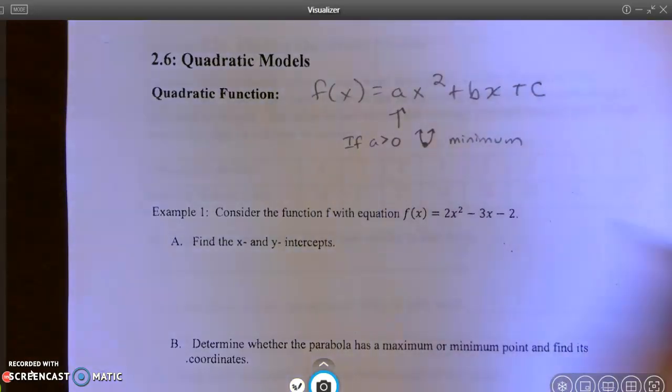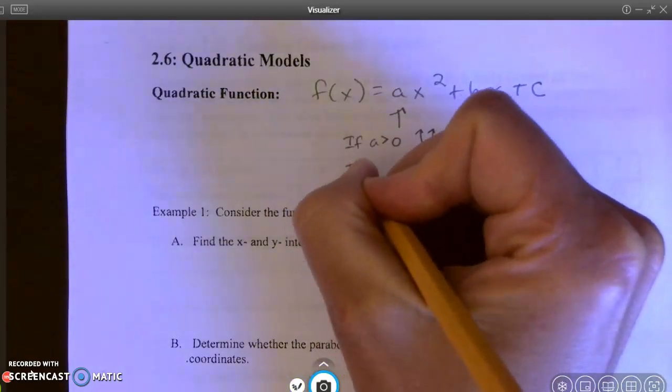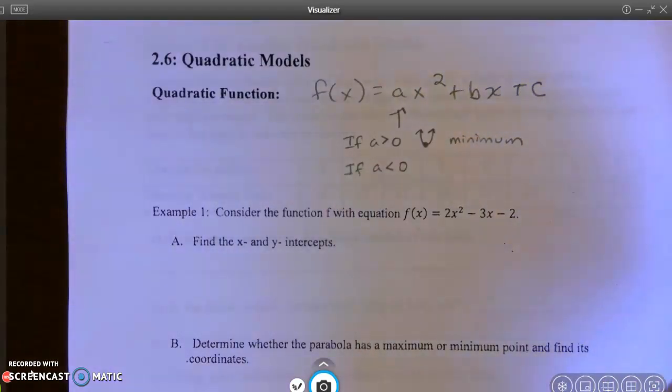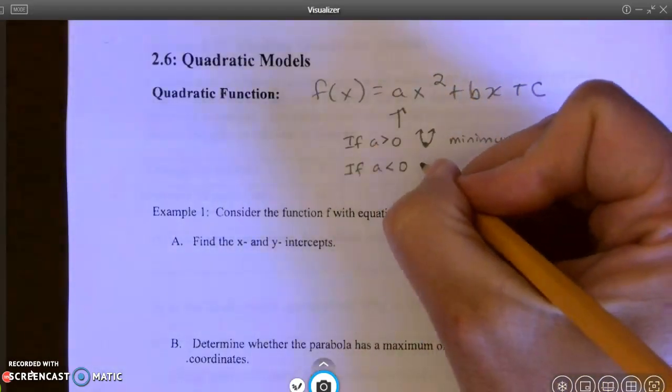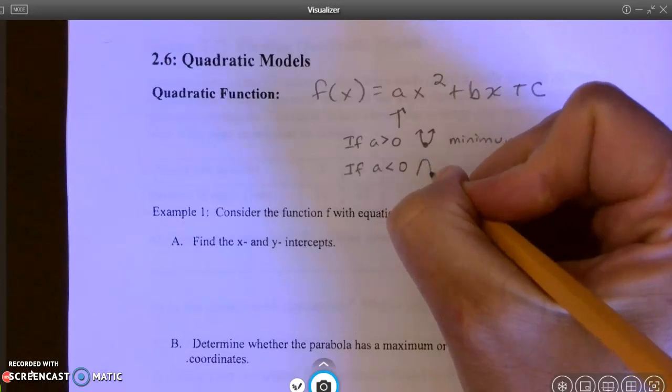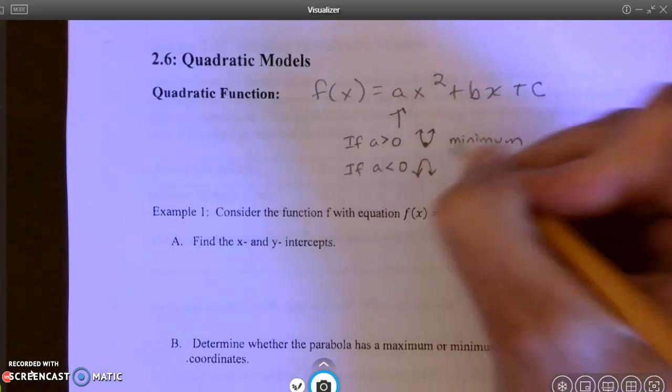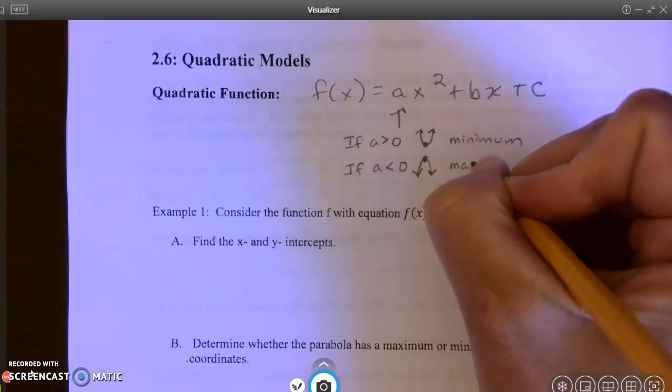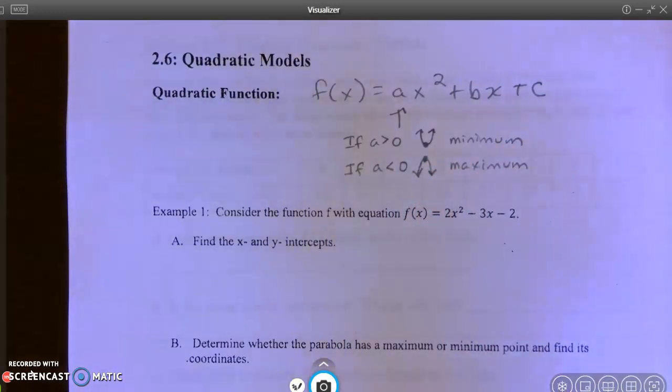However, if a is less than zero, which means it's negative, then that U is going to be flipped upside down, and instead of a minimum value, you're going to have a maximum value.